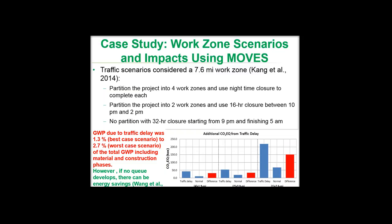Different scenarios were considered. In these scenarios, different lane closure strategies were exercised. The first one was partitioning the project into four different work zones using nighttime closures, and partitioning the project into two work zones with a 16-hour closure between 10 p.m. and 2 p.m. the next day, and no partition with a 32-hour closure starting from 9 p.m. and finishing at 5 a.m.